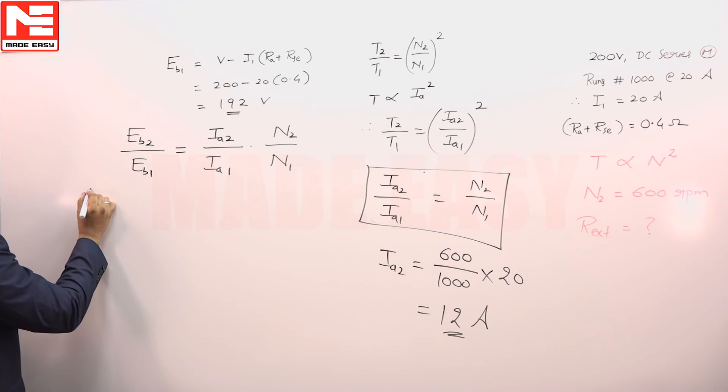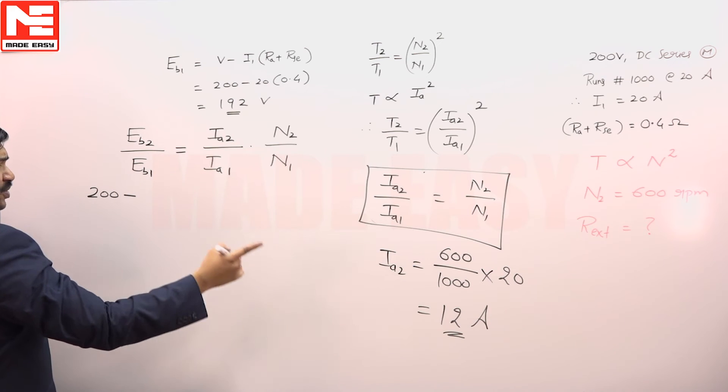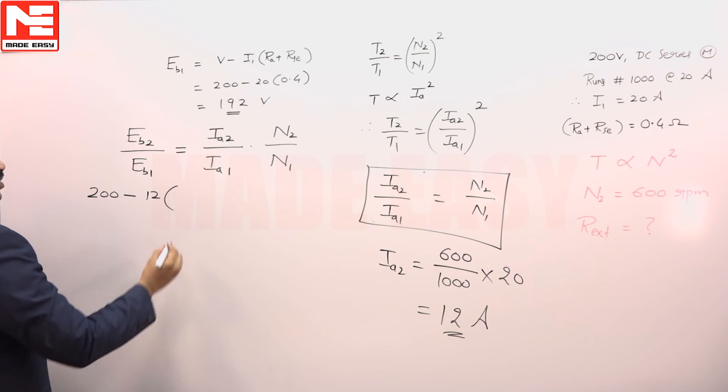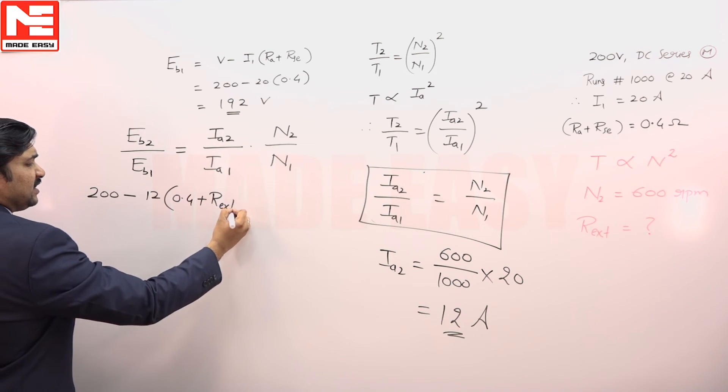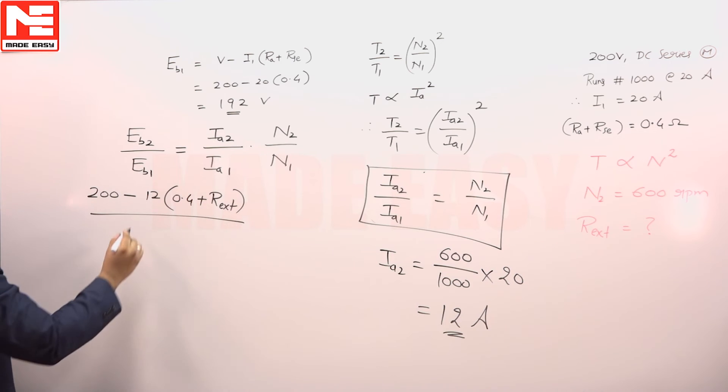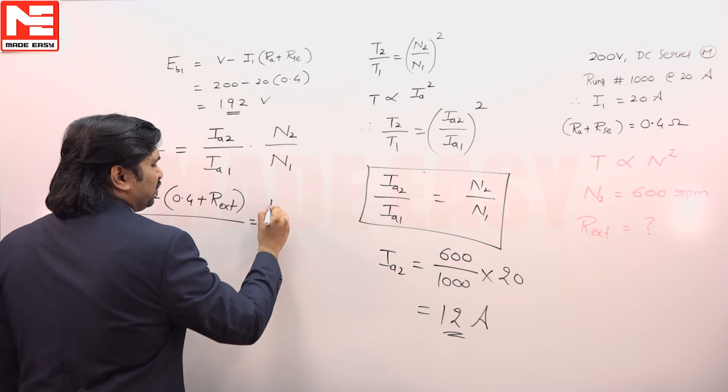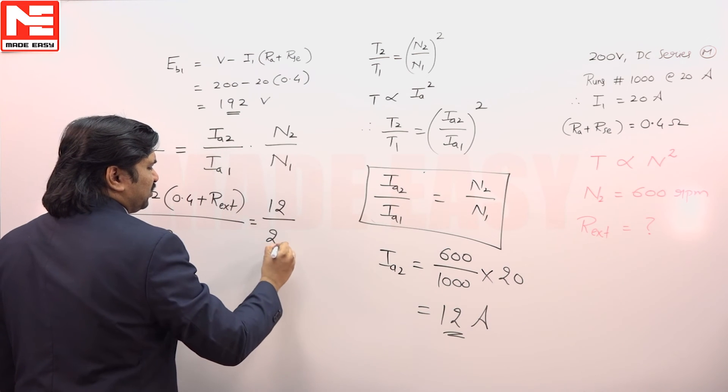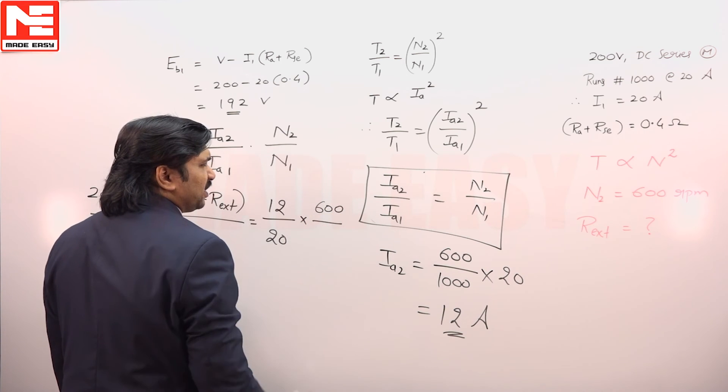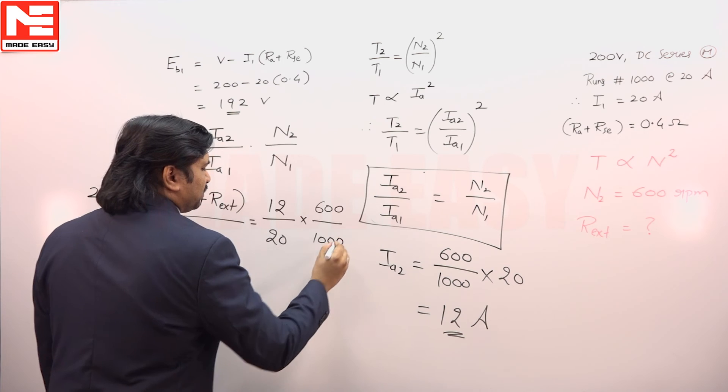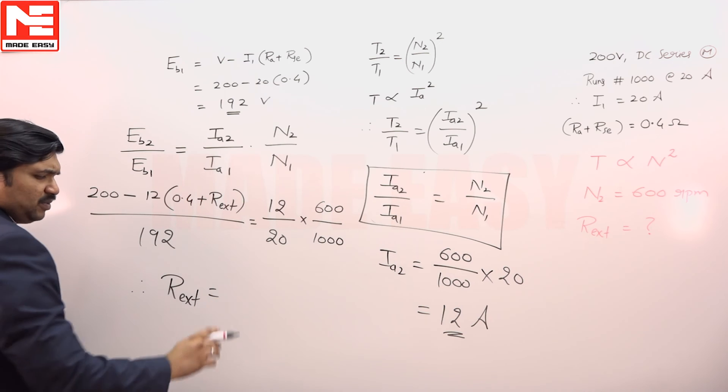So what is Eb2? 200 minus what is Ia2, 12 into what is Ra plus Rc, 0.4 plus we have to find some R external. That is Eb2 by what is Eb1, 192 is equal to what is Ia2, 12, Ia1 20 into what is N2, 600 by N1 is 1000. If you solve this we are going to get R external is equal to 10.5 ohms.